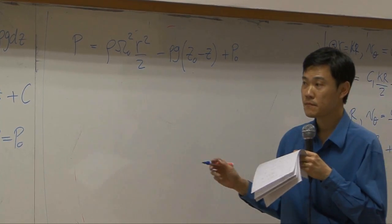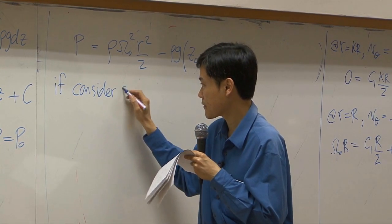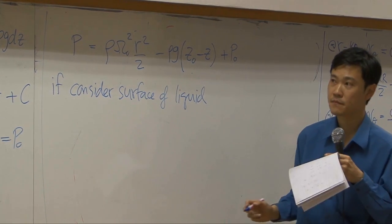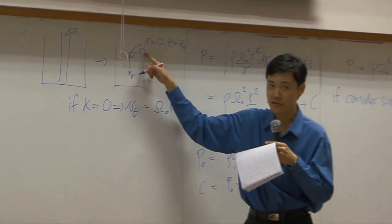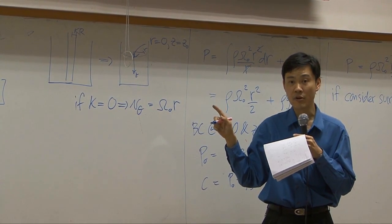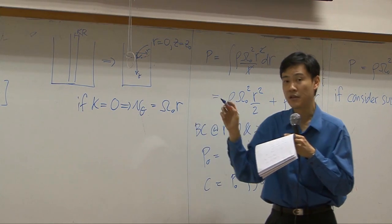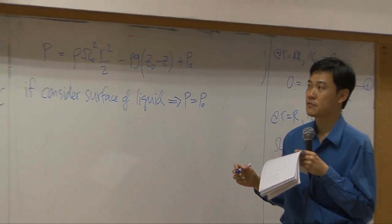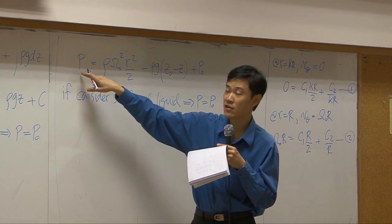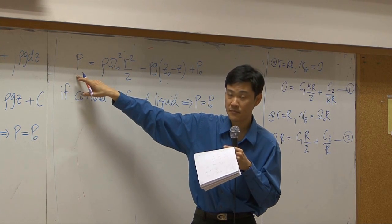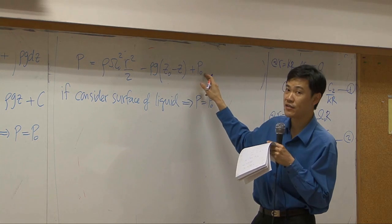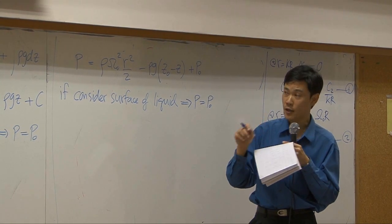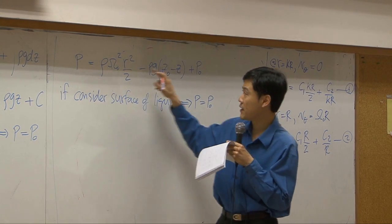If we consider the surface of the liquid, at any point on the surface the pressure is atmospheric pressure — so at all points on the surface pressure is equal to atmospheric. So if you replace the pressure on the left-hand side, the pressure on the right is the constant pressure on top of the liquid. If you consider just the surface, p can be taken as p₀ and it cancels out with that term.